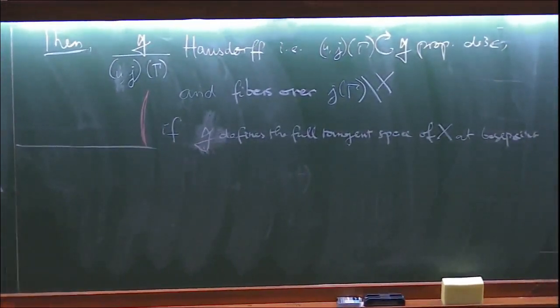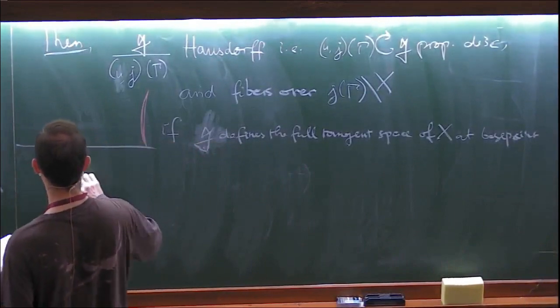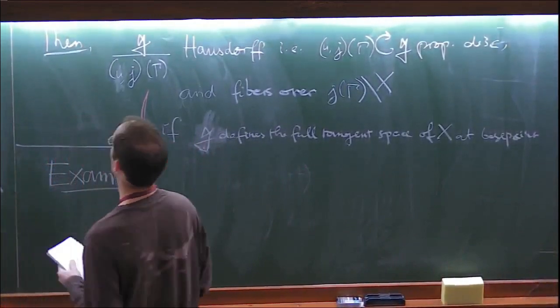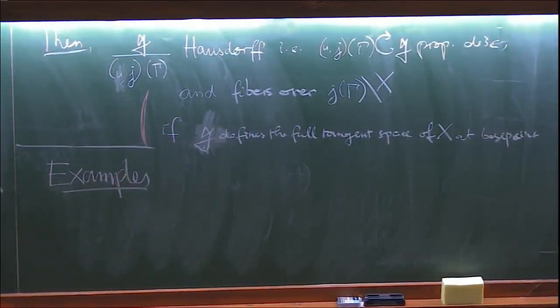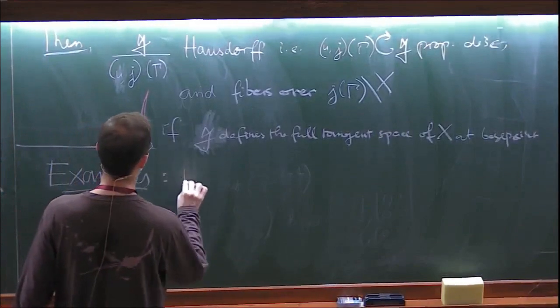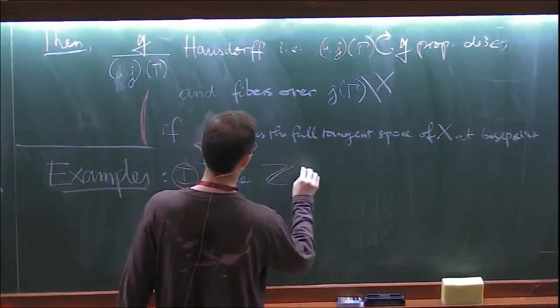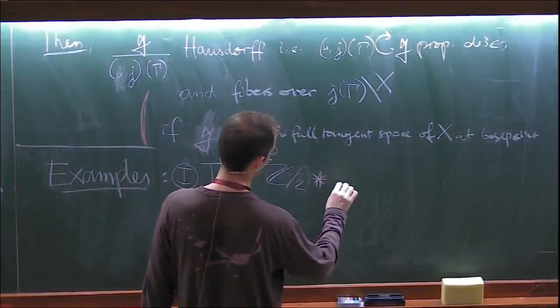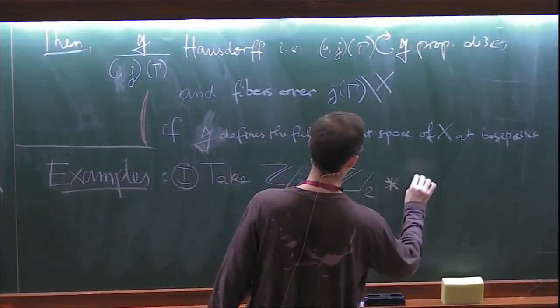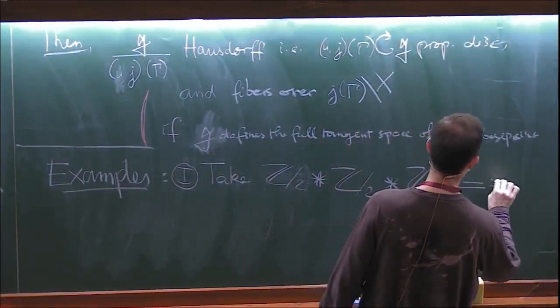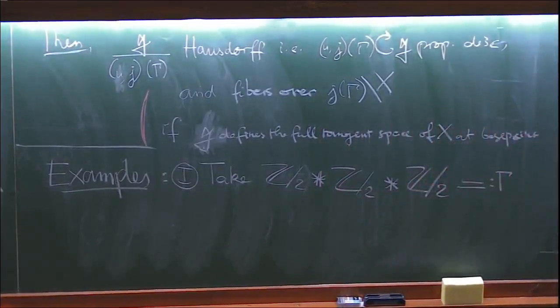Then UJ of gamma acts properly discontinuously on the Lie algebra G - this is a Hausdorff quotient, meaning the affine action UJ is properly discontinuous. Under the assumption that G defines the full tangent space of X at the base point, this Hausdorff quotient fibers over the initial quotient. That's the extra that we get.